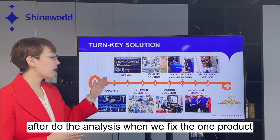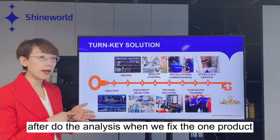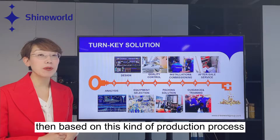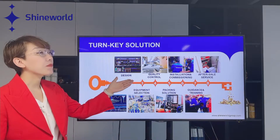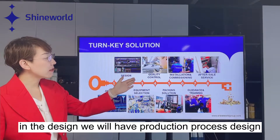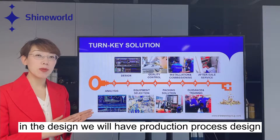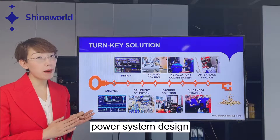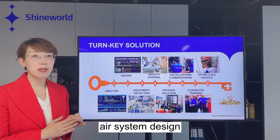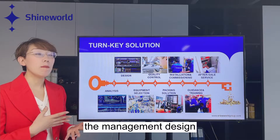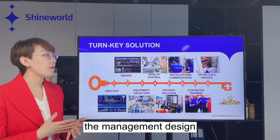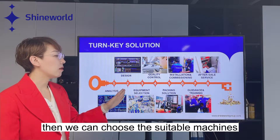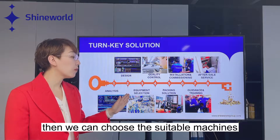After we do the analysis and fix on one product, based on the production process we will make the design. In the design, we will have production process design, water system design, power system design, air system design, and management design. Based on the design, we can then choose the suitable machines.